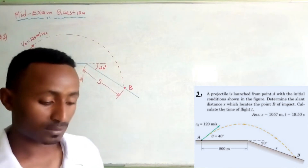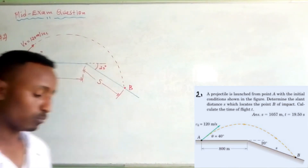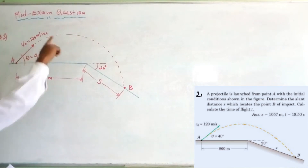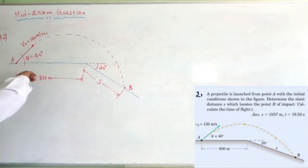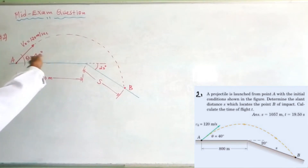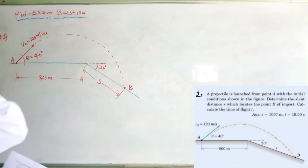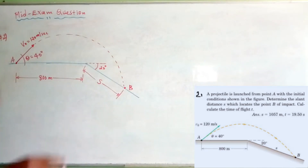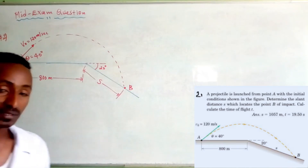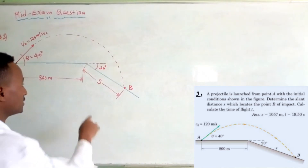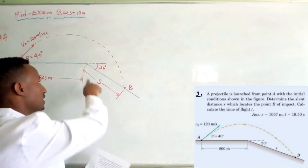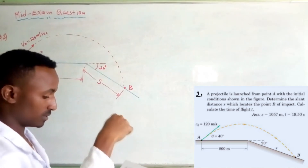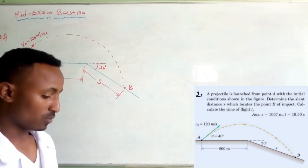The second question: a projectile, which is any kind of ammunition, is launched. The target point 2 is known. The initial velocity is 120 meters per second, with the initial conditions shown in the figure. We need to determine the slant distance, which locates point B near the target — that slant distance is the point of impact.